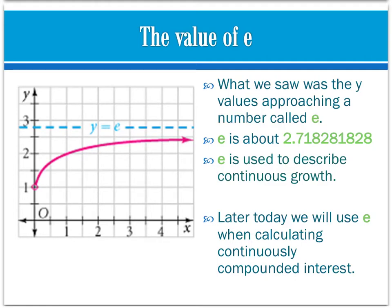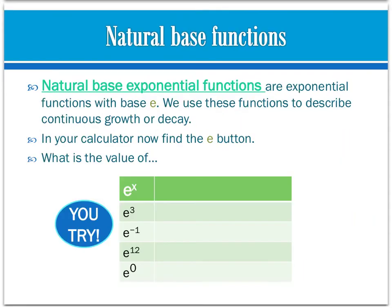Just like pi, e is symbolic notation for an irrational number. If you press e on your calculator, it will give you that value. E is used to describe continuous growth — growth that is happening continuously as time passes. You can see this on the graph of the function we were just looking at, where the asymptote it is approaching is y equals e. We're going to use e to calculate continuously compounded interest.